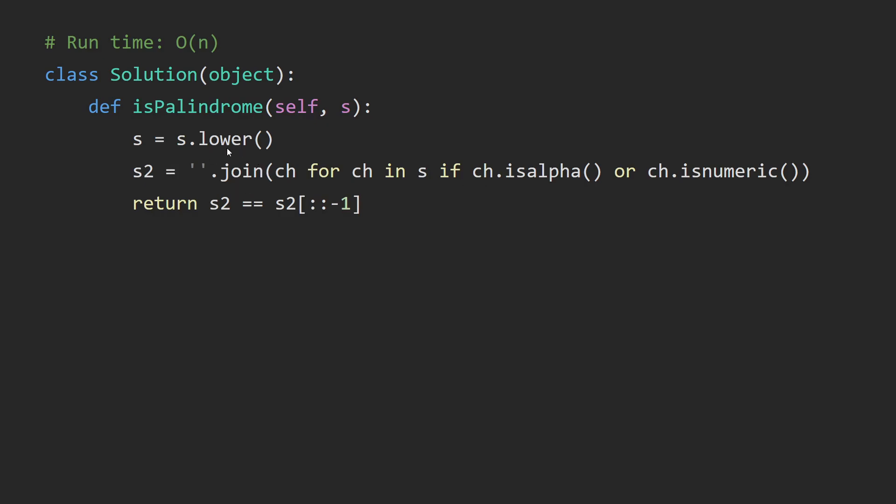Here we have a list, and we need to convert this list into a string. The join function will convert the list into a string. We have s2, then here we compare s2 to its reversed version. This is the syntax for reversing a string, and if the reversed version is the same as the original, then we know that it is a palindrome.